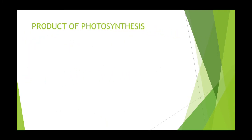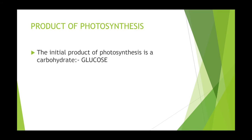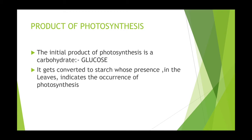Now let us know the product of photosynthesis. After photosynthesis, the initial product formed is a carbohydrate called glucose. It gets converted to starch, whose presence in the leaves indicates the occurrence of photosynthesis.